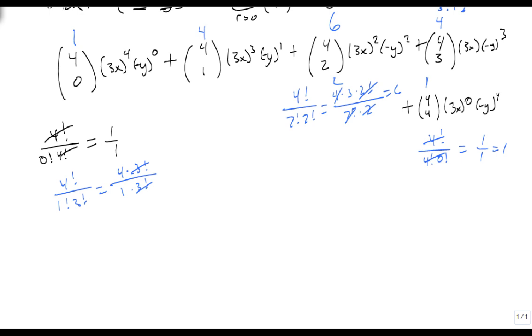So now we end up with 1 times 3x to the 4th. Well, 3 to the 4th is 81, so this gives us 81x to the 4th, and minus y to the 0 is just 1. Plus 4 times 27x cubed times a minus y, plus 6 times 9x squared times y squared. Remember the square sees the y.